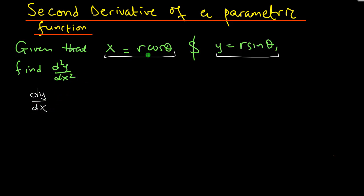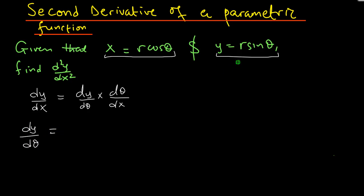These are parametric equations in terms of the parameter theta. To find the first derivative dy over dx, that's going to be dy over d theta divided by dx over d theta. Let's begin by finding dy over d theta. We have y equals r sine theta — r is a constant in this context, and the derivative of sine is cosine of theta, so dy over d theta equals r cosine of theta.